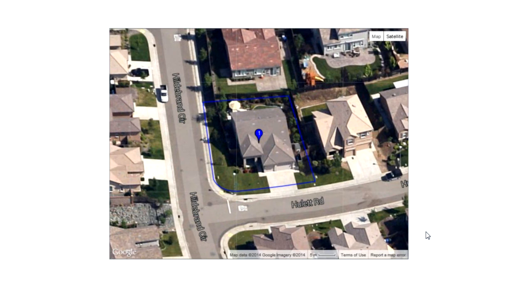Please note the default file extension for these Google Map image downloads is a PNG file. The PNG file type has a resolution that's a bit more crisp than a JPEG, and it's just as universal.